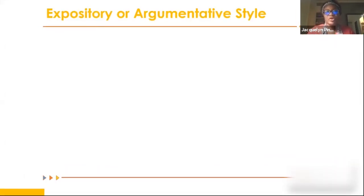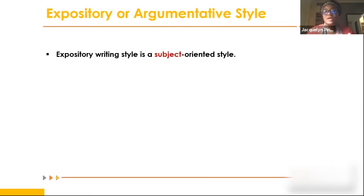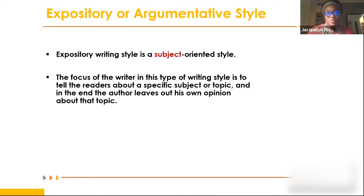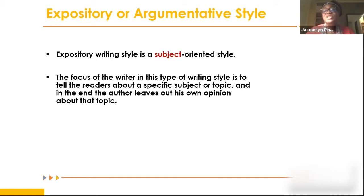Expository writing is a subject-oriented style normally used to inform, explain, and give more information. The focus of the writer is to tell readers about a specific subject or topic, and in the end the author leaves out their own opinion. For example, you could be explaining different breeds of rabbits - just giving straightforward information about them without any personal opinion.